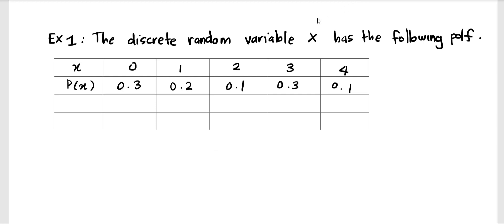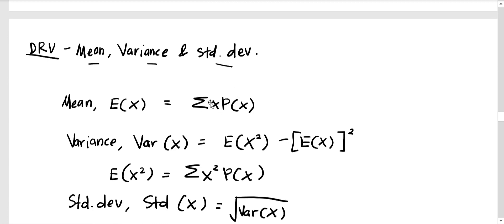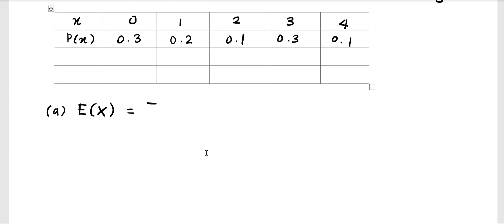Now we look at the example. It is given a discrete random variable. We have x and the probability of x, with five variables: x equals zero, one, two, three, and four. The question asks you to find the expected value of x, or the mean of x. The formula is the summation of x times the probability of x. We add a row for x times probability of x.